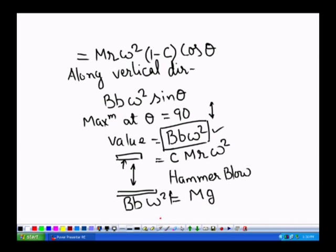So here from this equation we can say that omega square is equal to mg by BB. So omega is nothing but the speed.